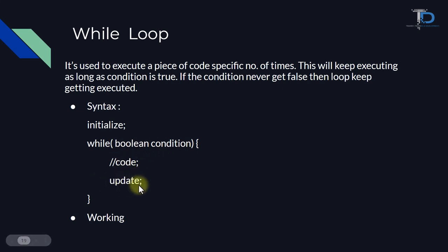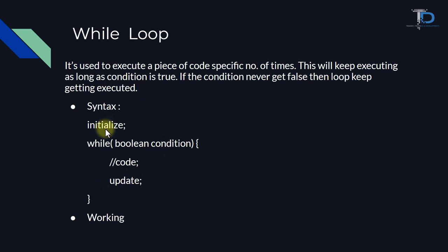Now the increment and decrement operator will work here. The initialization we were doing — int i equals 1 or 0 — we will do it here, and then we will go to the while loop. So let's see how the while loop works.